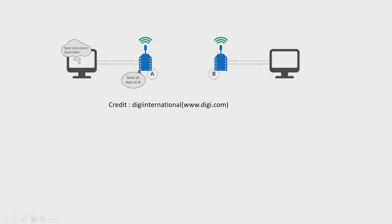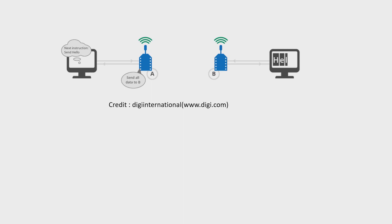Dear students, in this diagram, what you can observe? There is a sender A and receiver B. Sender sends one character at a time to the receiver and receiver also receives one character at a time. Here, the word Hello is sent from A to B. It will require 5 turns of transmission in order to transmit the complete word Hello.